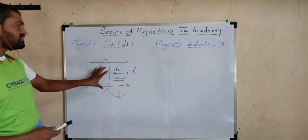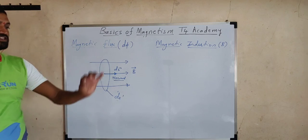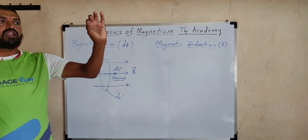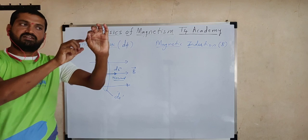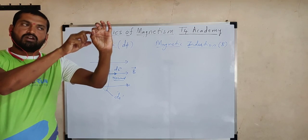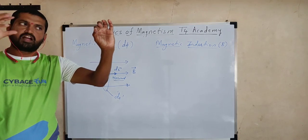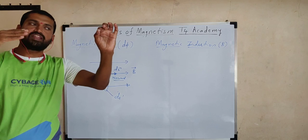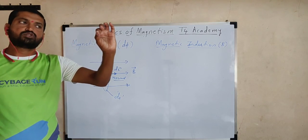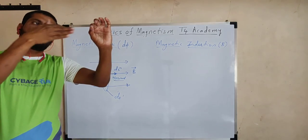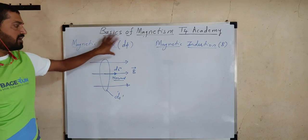Magnetic flux is defined as the total number of magnetic lines of force passing normally through that area — not inclined, not parallel. How many lines are passing normally through that area? That number itself is called magnetic flux.